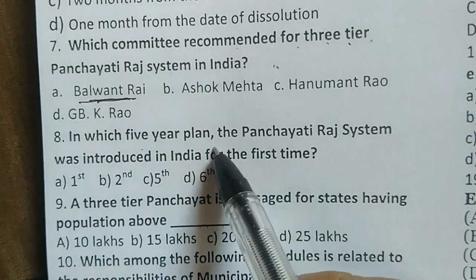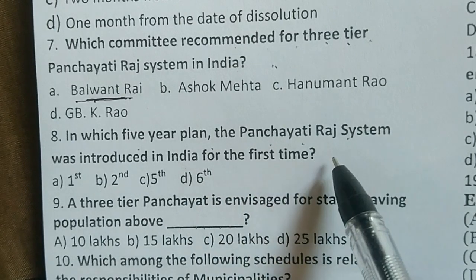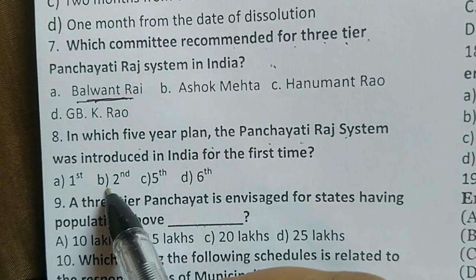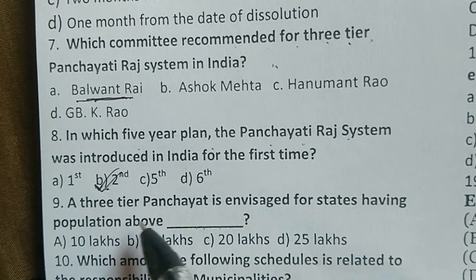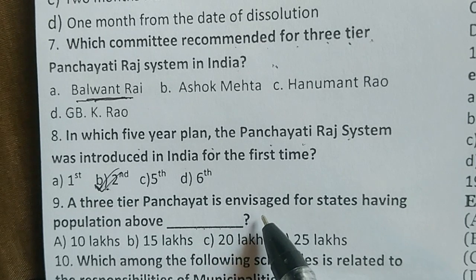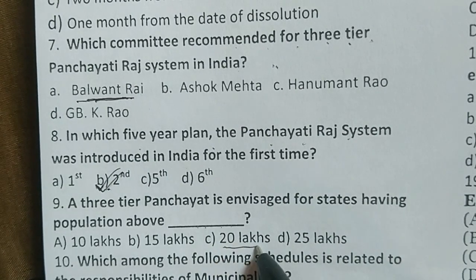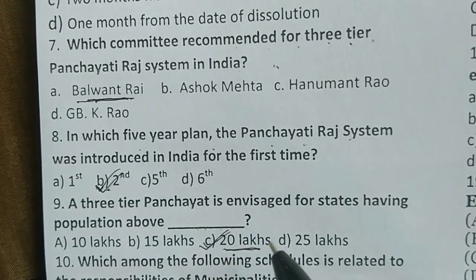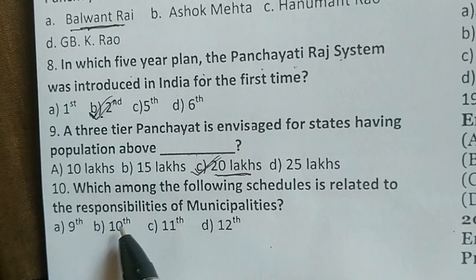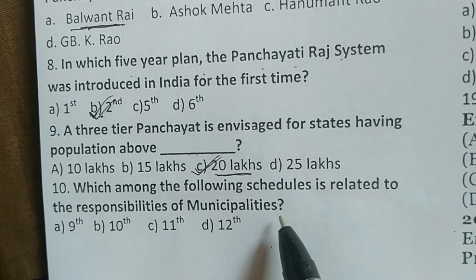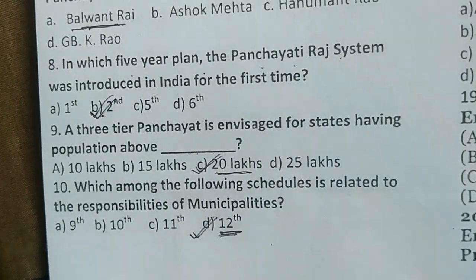In which Five-Year Plan was the Panchayati Raj system introduced in India for the first time? The correct answer is option B — the Second Five-Year Plan. A three-tier Panchayat is envisaged for states having a population above 20 lakhs — option C. Which schedule is related to the responsibilities of municipalities? The correct answer is the 12th Schedule — option D.